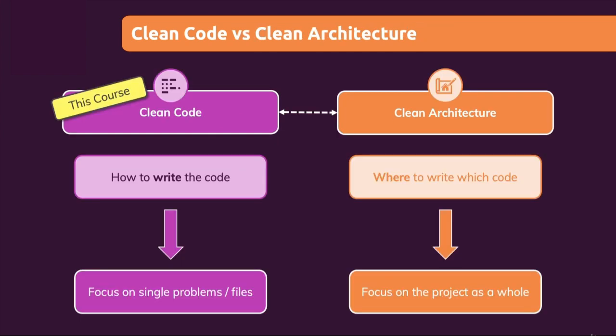What would be next steps? In this course we focused on clean code, and there is also something called clean architecture. This could be something you want to dive into next, but it will depend on which programming paradigm you're following — for example, if you're doing object-oriented programming — and on the programming language you chose. There you can dive into conventions, patterns, and ideas to organize your code and your project such that it is very extensible and maintainable — for example, separating your database access logic from your view logic. This could be something interesting in addition to knowing all these clean code rules.